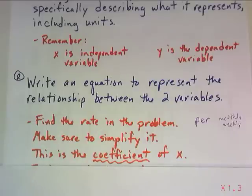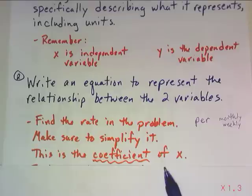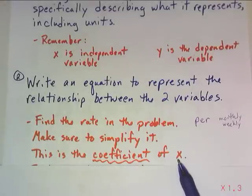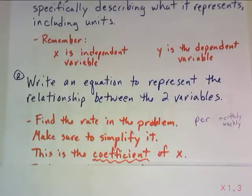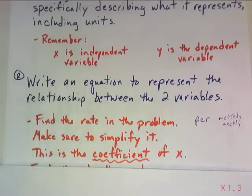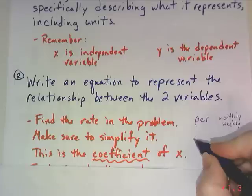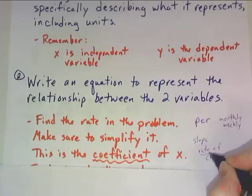Whatever the rate is, it may not be simplified, so make sure that you simplify that fraction. For example, if it's six dollars for four pounds of apples, you'd want to reduce that. Whatever you find as your rate, that's going to be the coefficient of x — or whatever letter you use for your independent variable — in the equation. Remember that value is going to be the same as the slope in your graph and the rate of change in your table. That's how these things are all connected — they're all rates.